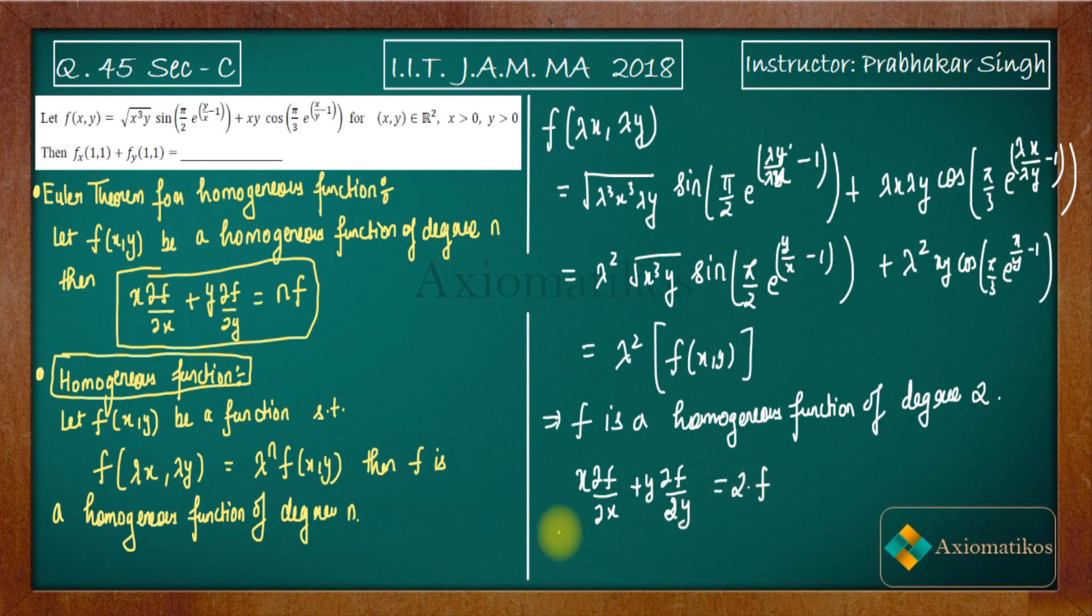At (1,1), we are evaluating everything at x=1 and y=1. What happens? We will get ∂f/∂x + ∂f/∂y at (1,1).